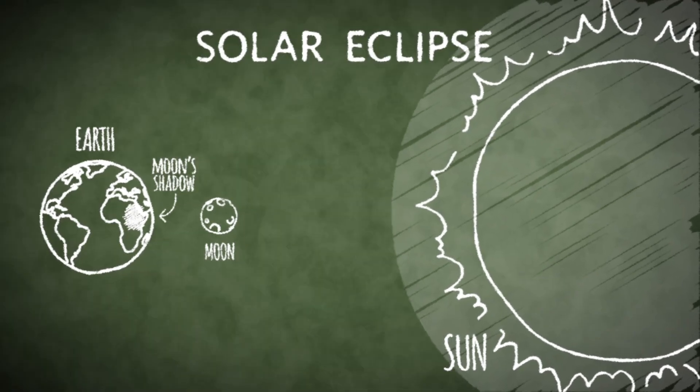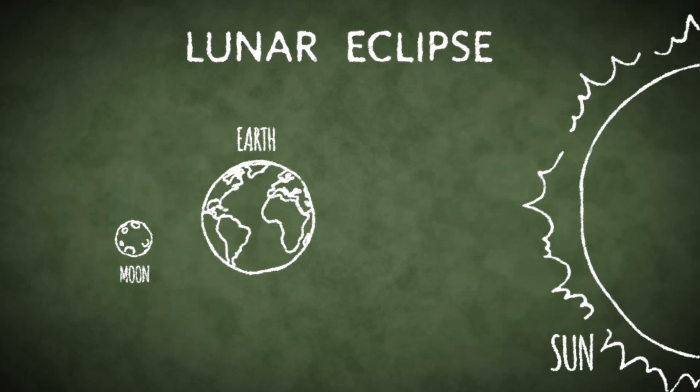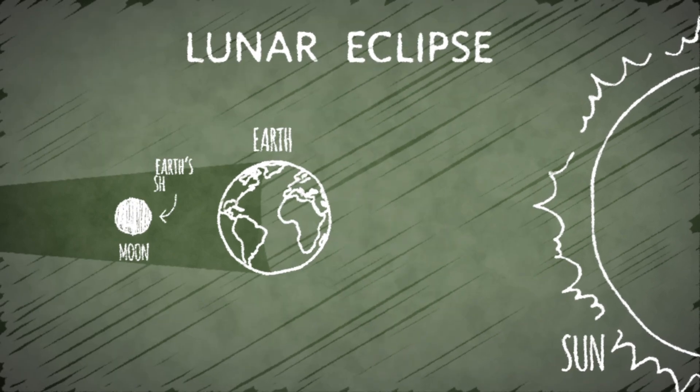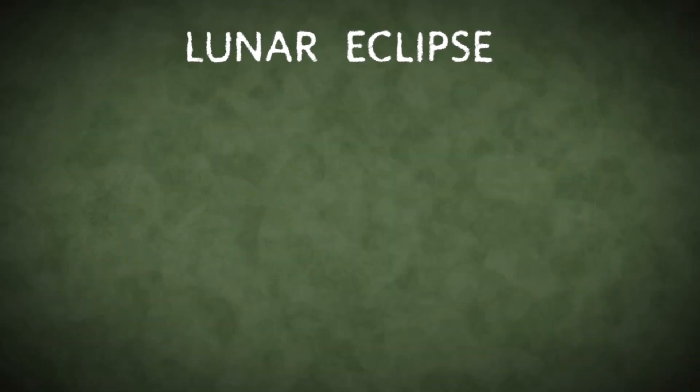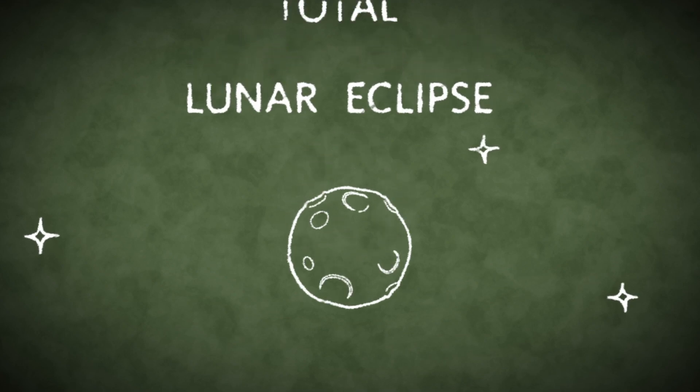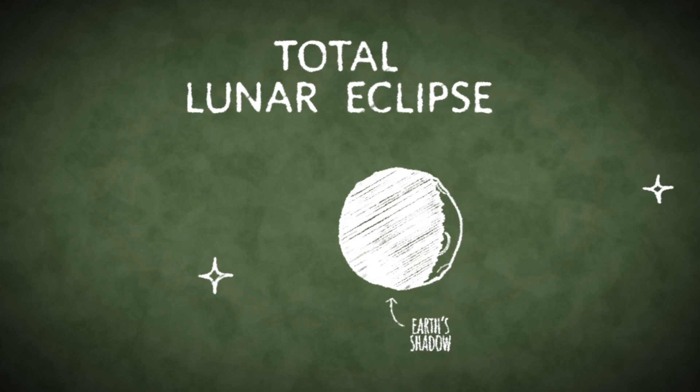On the other hand, a lunar eclipse occurs when Earth and the Sun are on the same side of the moon, so that the Sun is casting the shadow of Earth onto the moon. What's really unusual about lunar eclipses, particularly total lunar eclipses, is that when the moon passes completely into Earth's shadow, it doesn't just darken and disappear against the blackness of the night sky.